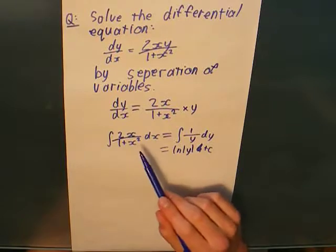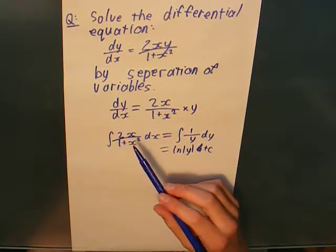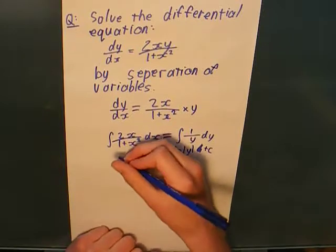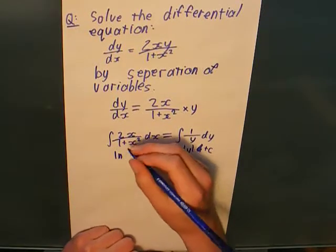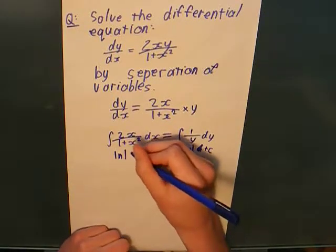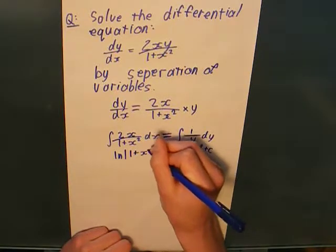So, I'm going to use a bit of practiced knowledge of integration by substitution to just go straight to ln of absolute value of 1 plus x squared.